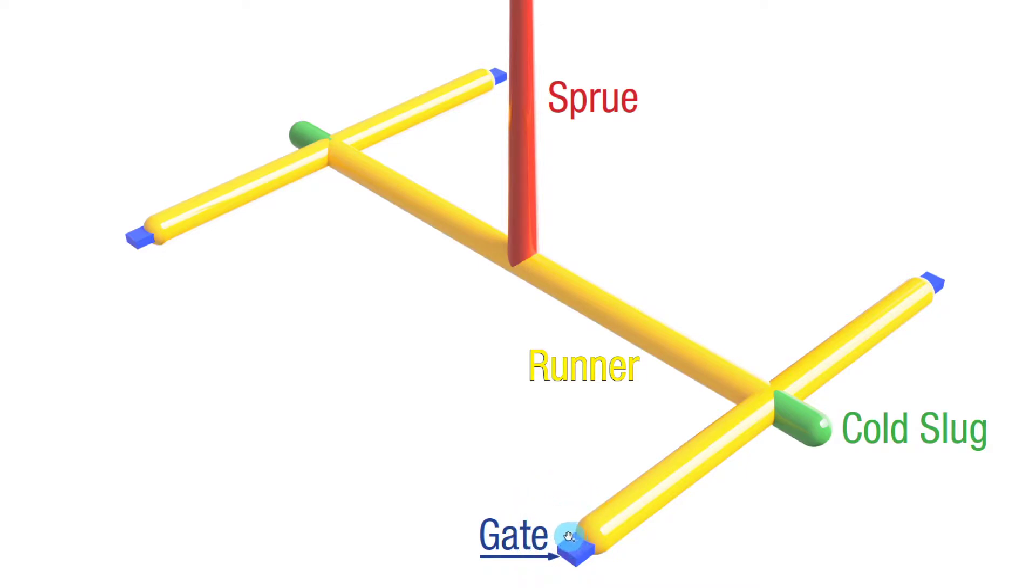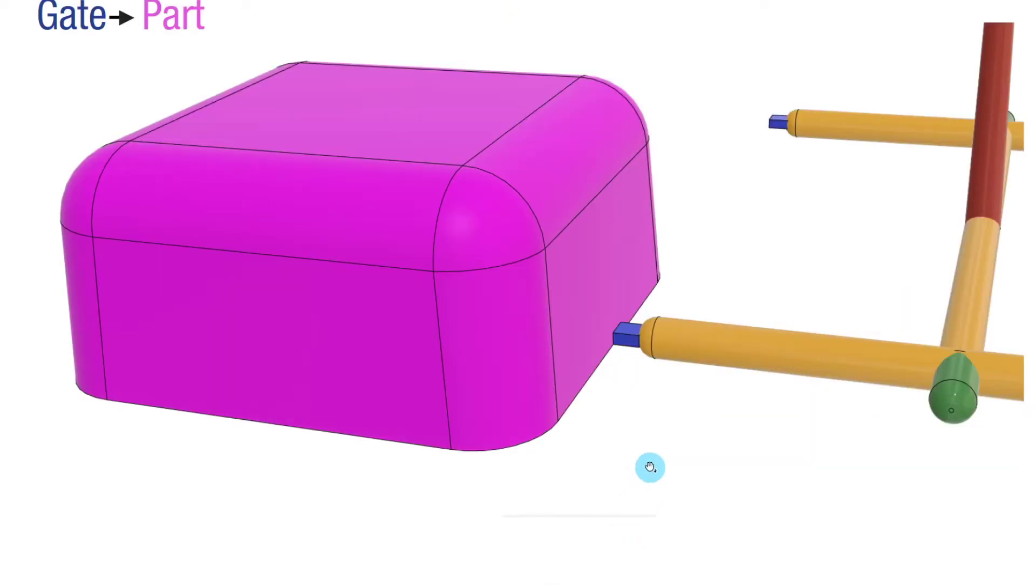We're going to be talking about the gate, which is a very small piece of plastic that's formed into the end of the runner. As you can see, the gate attaches to the part, like shown, and in this example it's right here on the edge of the part.